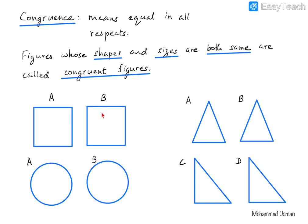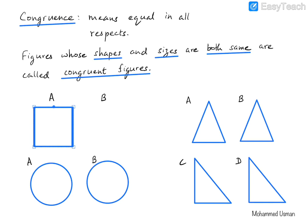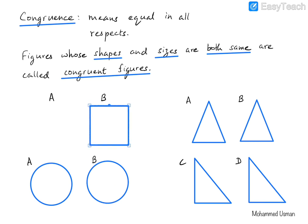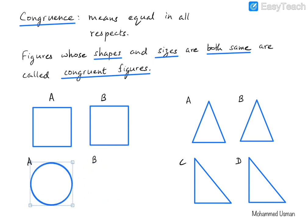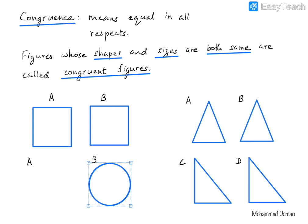We have square A and square B. These two squares are congruent to each other, which means that if we place one figure on top of the other, they will completely cover each other. Similarly, if we look at circles A and B, they are also congruent to each other — placing circle B on top of circle A shows it completely covers it.